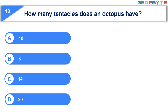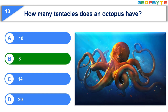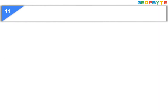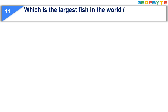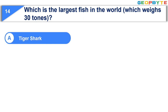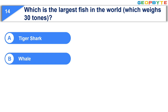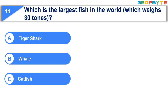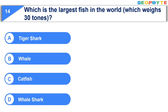Your time is up and the correct answer is Option B: 8. The fourteenth question — Option A: Tiger shark. Option B: Whale. Option C: Catfish. Option D: Whale shark.